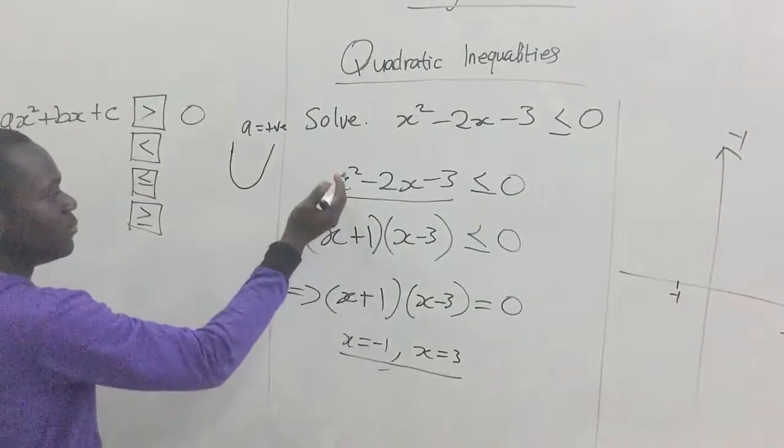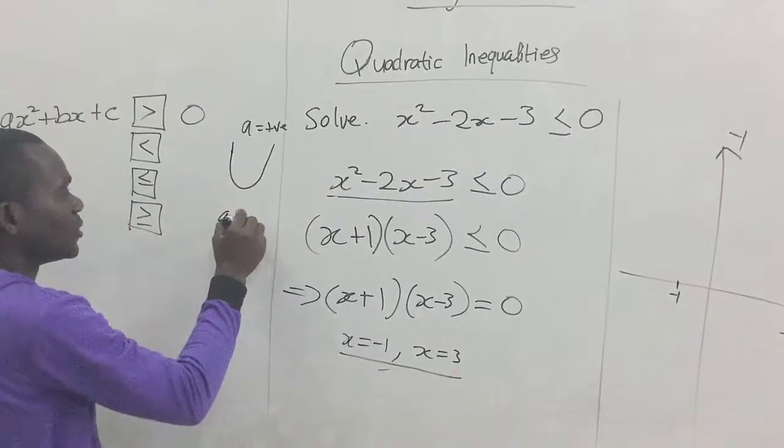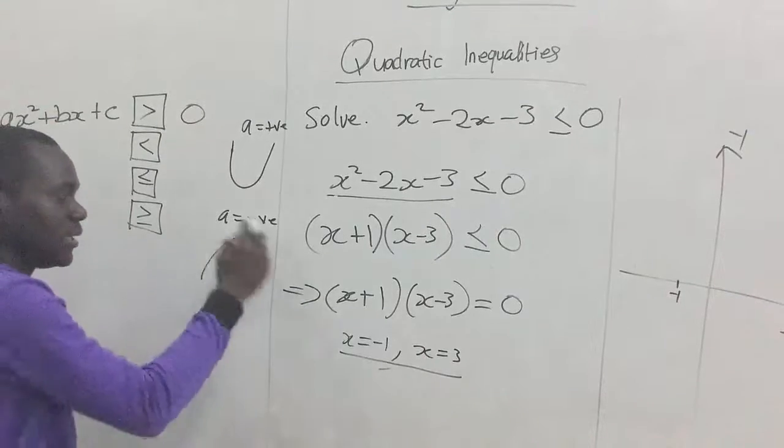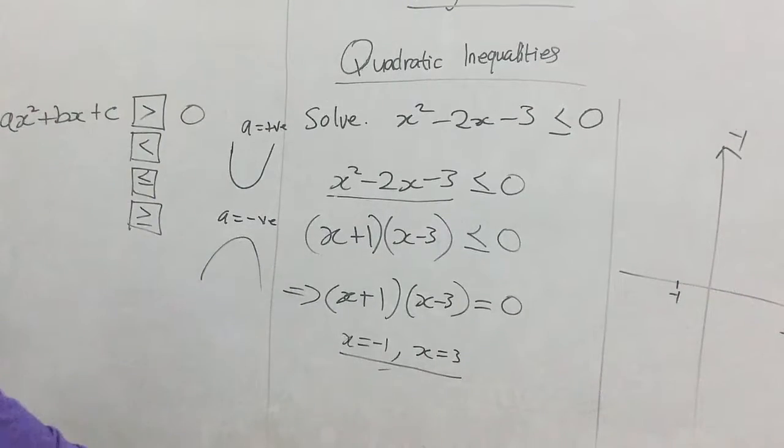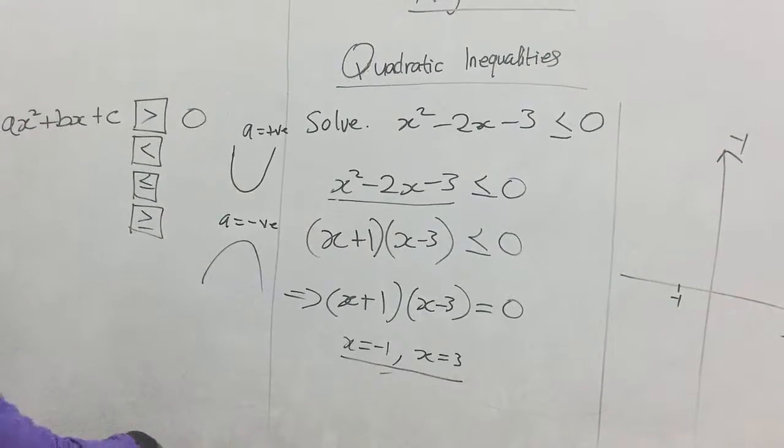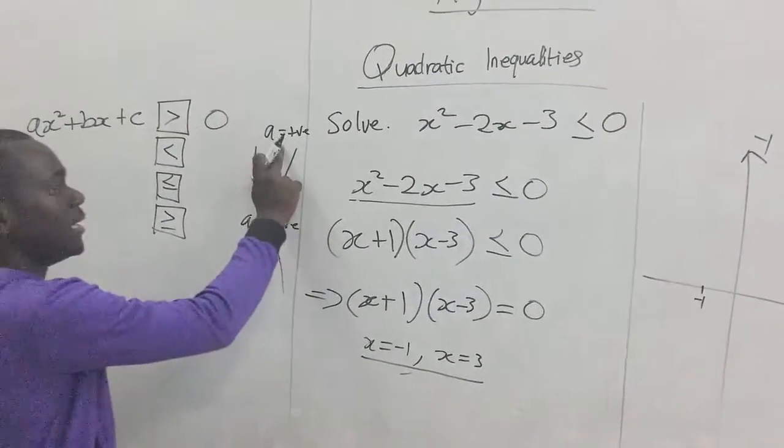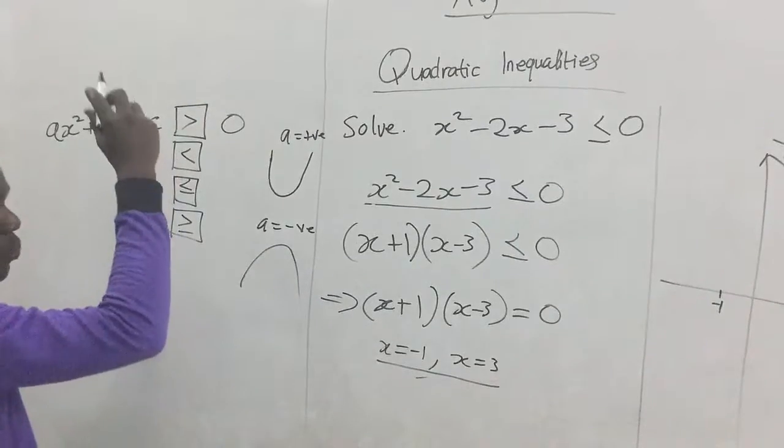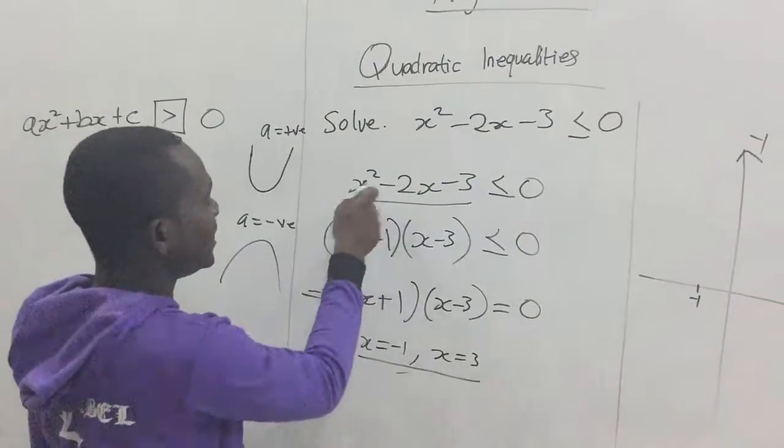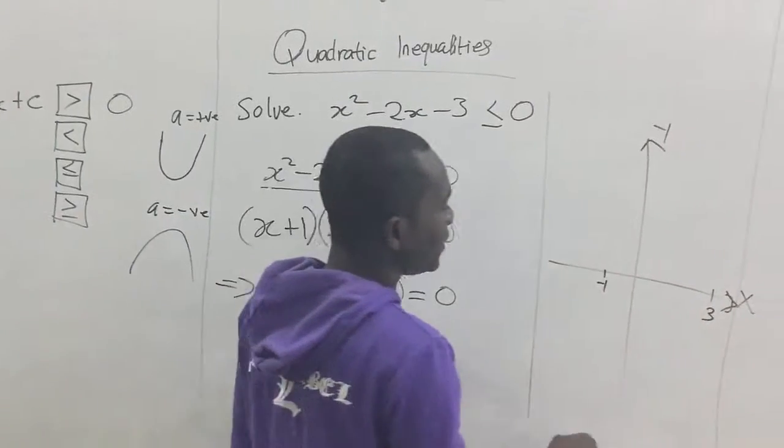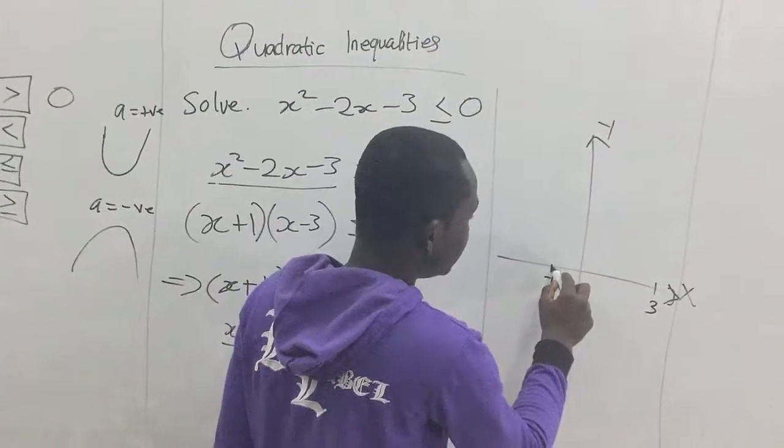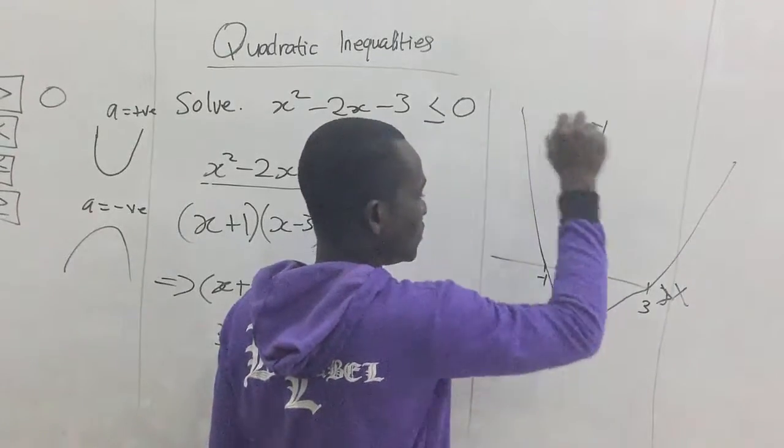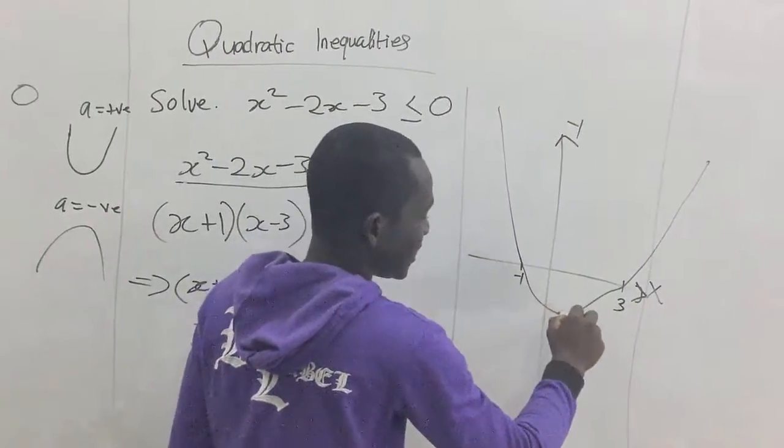And when the coefficient of x squared is negative, that is a equals negative value, our graph looks this way. It turns upside down or opens downwards. When a is positive, the coefficient of x squared, the graph opens upwards. Since our coefficient here is positive, our graph is going to open upwards. So, all that we need to do is to move upwards this way. So, that's how the graph will look like. It's just a sketch.